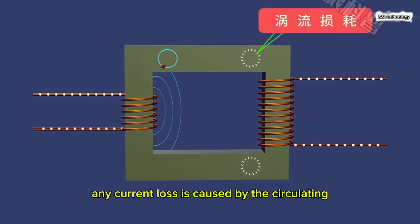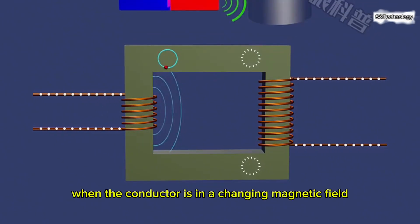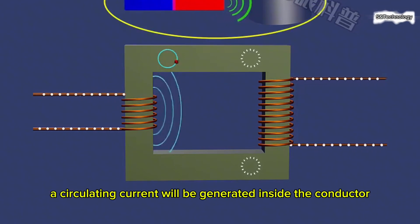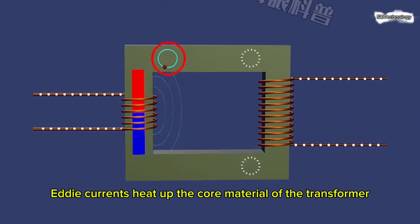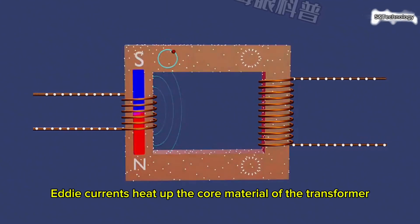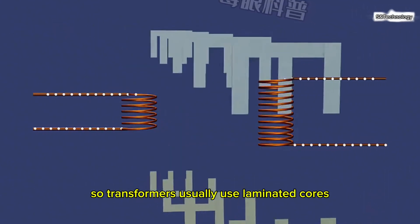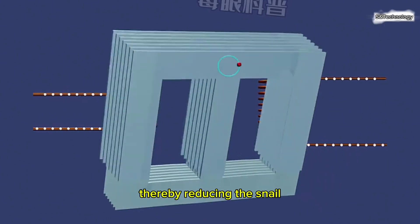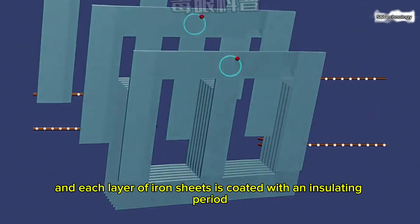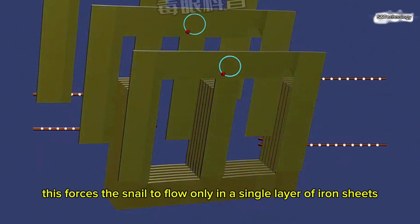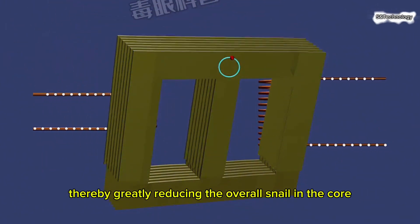Eddy current loss is caused by the circulating current loop in the conductor. When the conductor is in a changing magnetic field, a circulating current will be generated inside the conductor. This is the eddy current loop. Eddy currents heat up the core material of the transformer. So transformers usually use laminated cores. These iron sheets shorten the current path, thereby reducing the eddy current. And each layer of iron sheets is coated with an insulated coating. This forces the eddy current to flow only in a single layer of iron sheets, thereby greatly reducing the overall eddy current in the core.